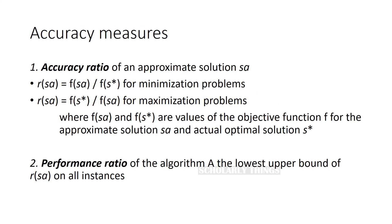When the output is just an approximation of an optimal solution, we need to also know the accuracy of it. The accuracy ratio of an approximate solution Sa is defined as R(Sa) = F(Sa) / F(S*) for maximization problems, where F(Sa) and F(S*) are the values of the objective function F for the approximate solution Sa and the actual optimal solution S* respectively. The performance ratio of an algorithm is the lowest upper bound of R(Sa) over all instances.